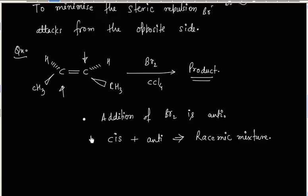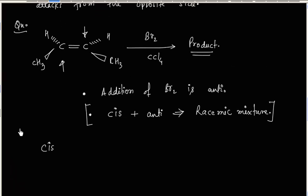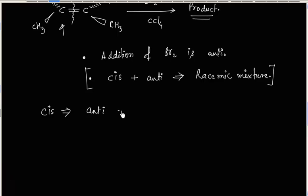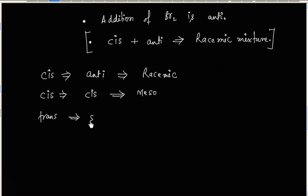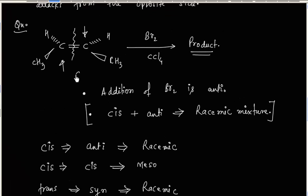This is a symmetrical alkene. The rules are: if you have cis-2-butene and addition is anti, the final product is racemic mixture. If you have cis-2-butene and addition is syn, the product is meso. If you have trans-2-butene and addition is syn, the product is racemic mixture. If you have trans-2-butene and addition is anti, the product is meso.